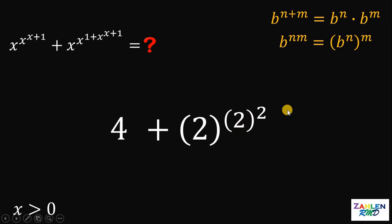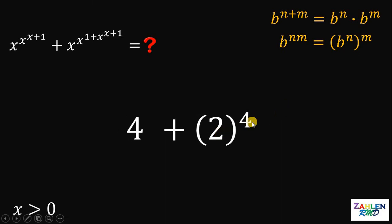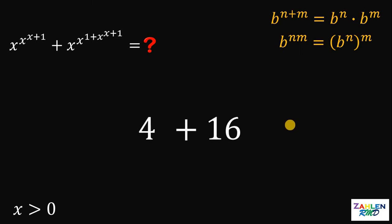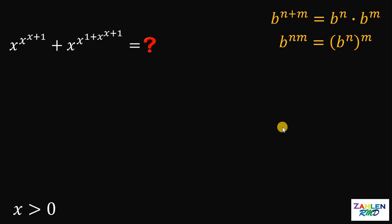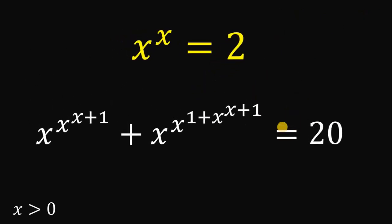Now, 2 raised to 2 raised to 2 is just 2 raised to the power of 2 raised to 2. So 2 raised to 2 gives us 4, and 2 raised to 4 gives us 16. Therefore, the value of this expression is just 4 plus 16, or simply 20. Therefore, the value of this crazy expression is just 20. And as always, we are done.